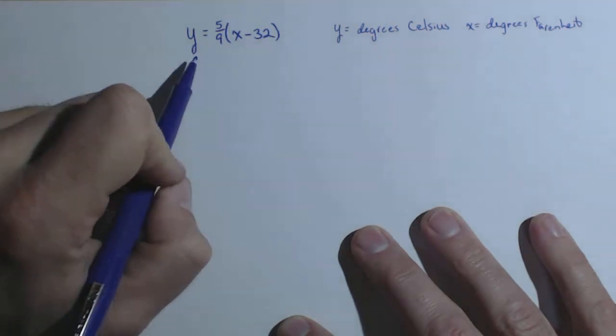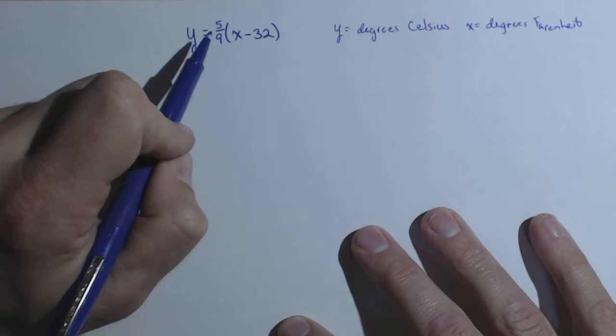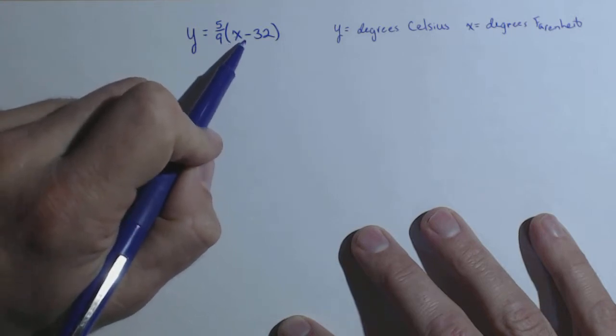First off, let's start with the formula that gives us degrees Celsius, y, in terms of degrees Fahrenheit, x.